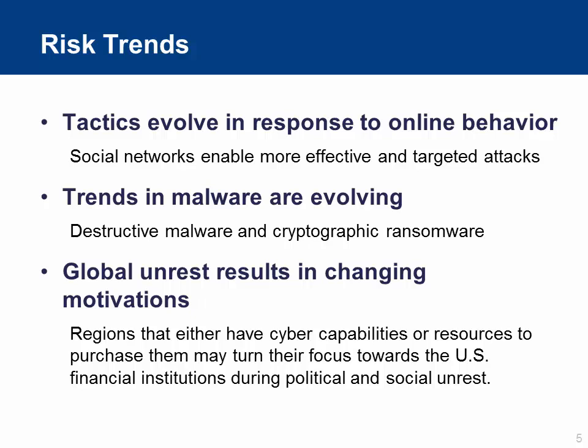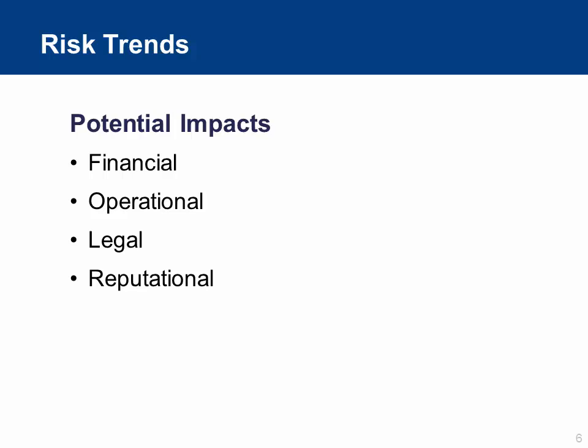Finally, global unrest results in changing motivations, which leads to further attacks on financial institutions. Every story you read in the newspaper, from the most local to the most international, has a cyber attack likely associated with it. As global unrest persists, U.S. symbols of freedom and democracy will increasingly be targeted, including financial institutions. All of these risk trends have potential financial, operational, legal, and reputational impacts. Recent high-profile attacks demonstrate that cyber incidents can significantly affect capital and earnings, resulting in costs for forensic investigations, updating technology, addressing operational gaps, legal fees, consumer credit monitoring, and public relations campaigns.